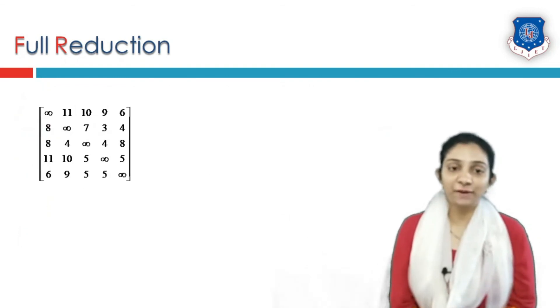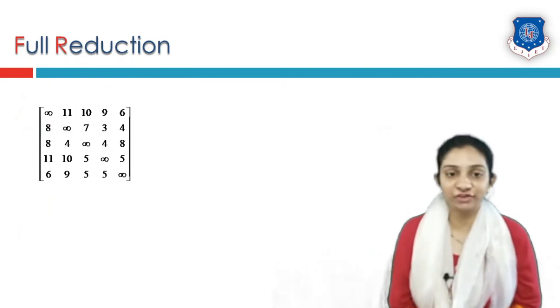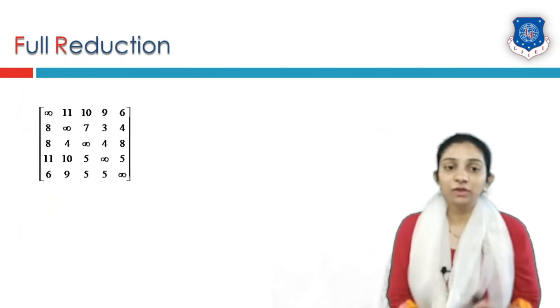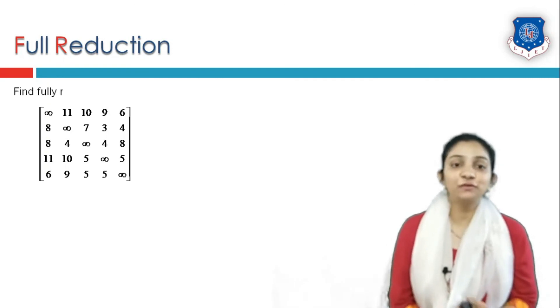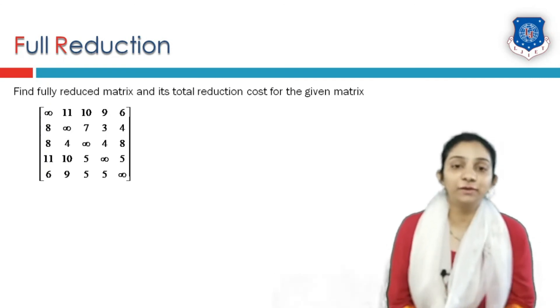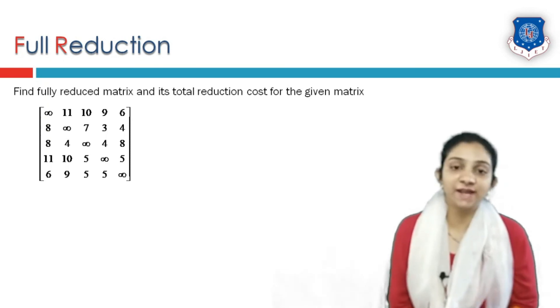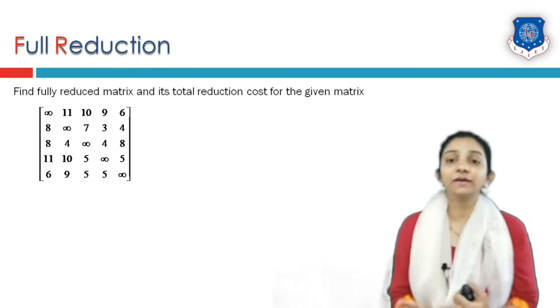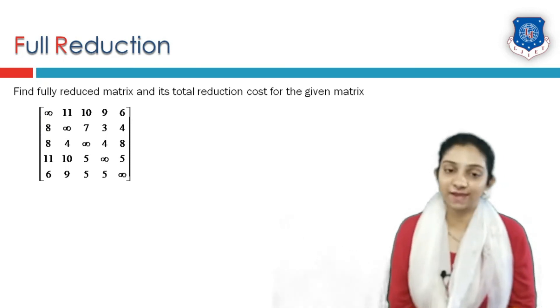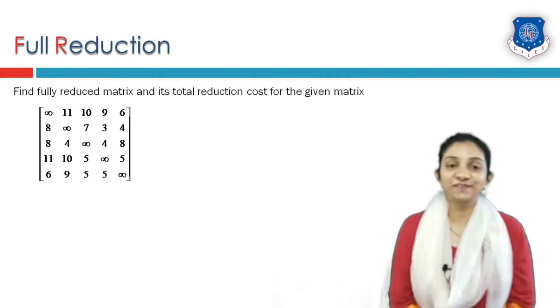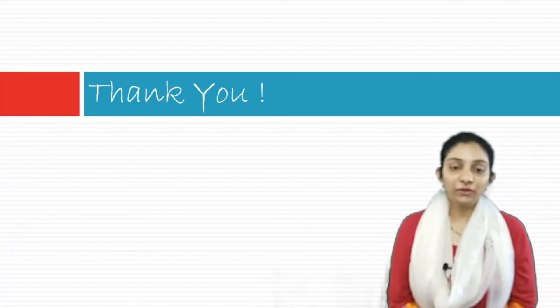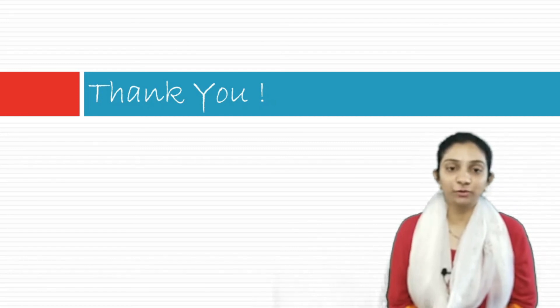For your practice, a 5 by 5 matrix is given. Your task is to find the fully reduced matrix and its total reduction cost for the given example. I hope it is clear to you. Thank you everyone for watching this video. This is Munira Topia signing out — I hope you enjoyed this video.